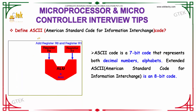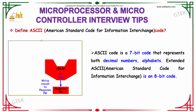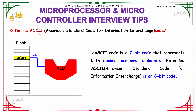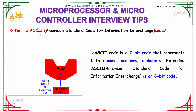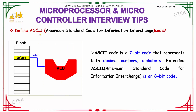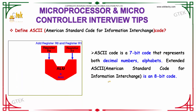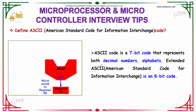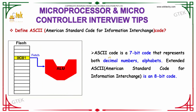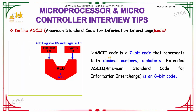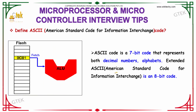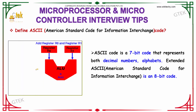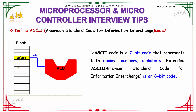Define ASCII code. ASCII is abbreviated as American Standard Code for Information Interchange. ASCII code is a 7-bit code that represents both the decimal number as well as alphabets.